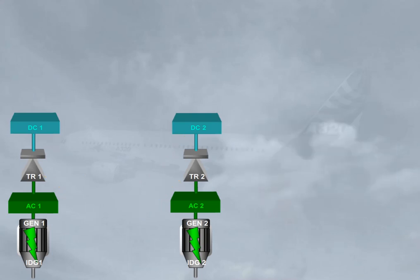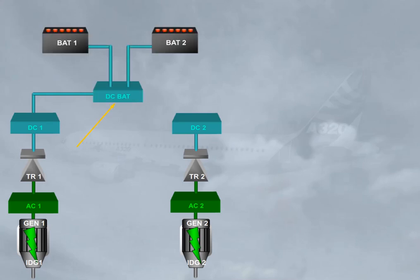DC bus 1 feeds the DC battery bus, DC bat. The DC bat bus can charge the batteries or receive power from the batteries as required. This will be further explained in the operation module.